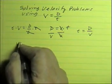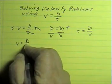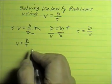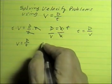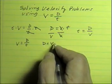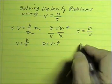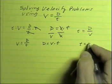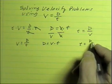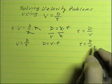So there are three ways to use the equation: velocity equals displacement divided by time, displacement equals velocity times time, and time equals displacement divided by velocity.